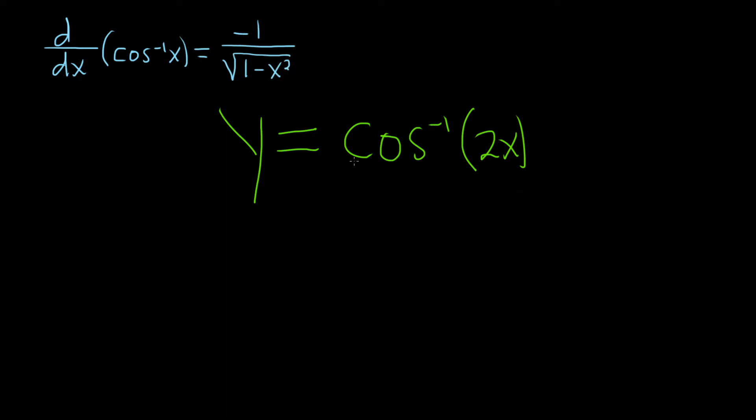So in this problem, we just have to apply this formula to this function. So our x here is really 2x. So we just get to use this formula and then we multiply by the derivative of the inside. That's the chain rule.